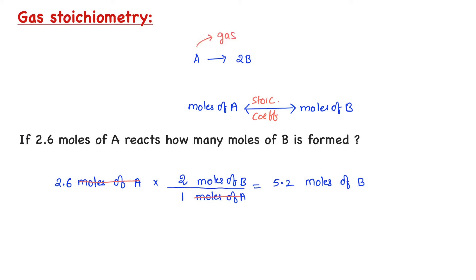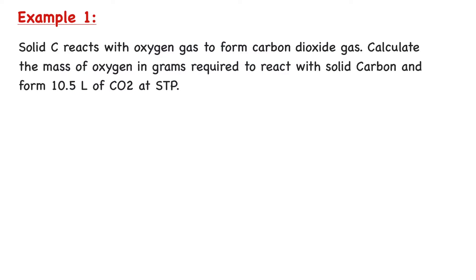Now let's say reactant A is a gas. Instead of the number of moles of A, we are given the pressure, volume, and temperature of A, and we are asked to find the number of moles of B formed. We can use the ideal gas equation to convert pressure, volume, and temperature of gas A into number of moles of A, and then convert that into number of moles of B. This is how we do gas stoichiometry problems. Let us do a couple of example problems.